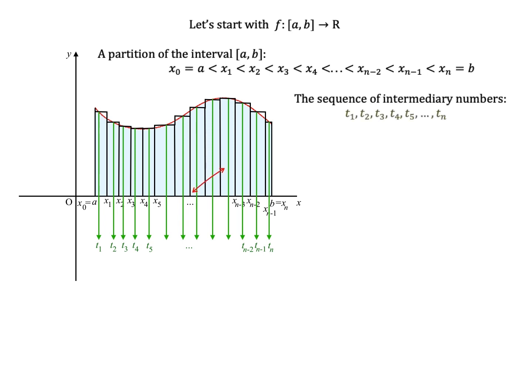Any subinterval xi minus 1 to xi, where i is an integer from 1 to n, has its intermediary point ti, as we see in this example.